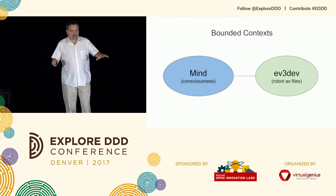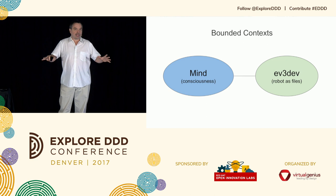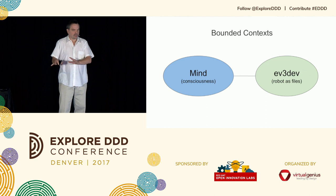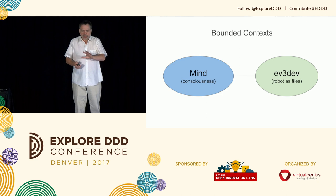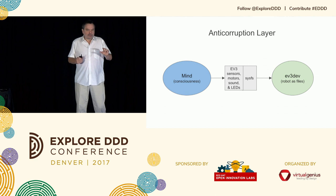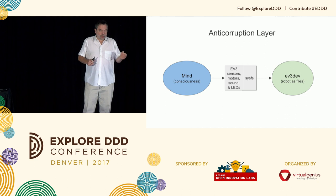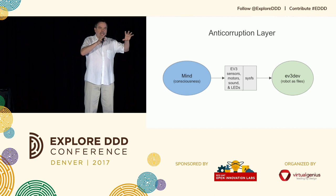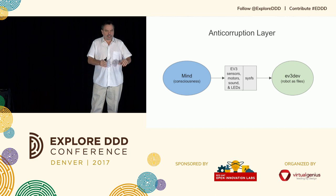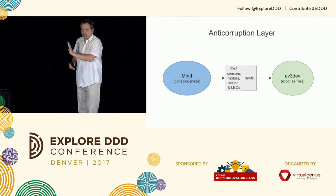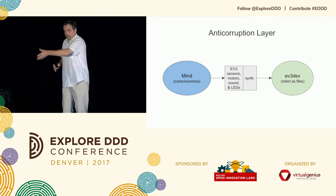We have two bounded contexts to start with. We have the EV3 Dev world, which sees everything as files you read from and write to — essentially global variables. And then there's the mind, the consciousness — this is where my design lies. These are two bounded contexts. One of the first things I did — I didn't think of it as such at the time — was to develop an anti-corruption layer, so that I could have a mind in terms of agents doing simple things in simple ways, functionally implemented.